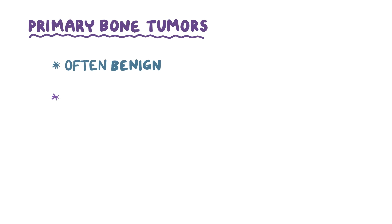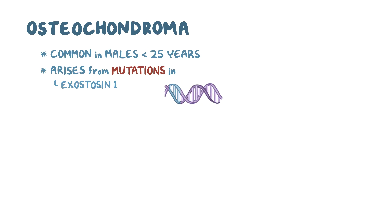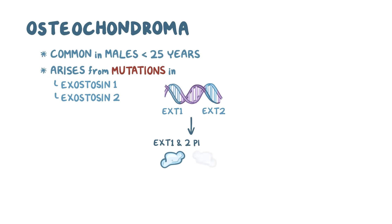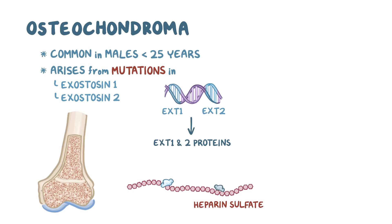Primary bone tumors can be divided into ones that are most often benign and those that are most often malignant. The most common benign tumor is an osteochondroma, which commonly affects males under 25 years of age. Osteochondroma is thought to arise from mutations in the exostosin 1 (EXT1) and exostosin 2 (EXT2) genes, which encode the exostosin 1 and 2 proteins. These proteins help to synthesize heparin sulfate, which regulates the growth of the growth plate.